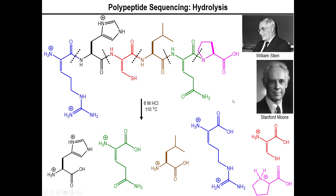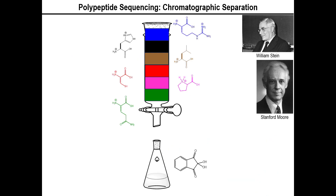Once this happens, comes the laborious part of separating the amino acids from each other. For this you use column chromatography — or to be most exact, you let a high-performance liquid chromatograph do this for you, also known as an HPLC instrument.